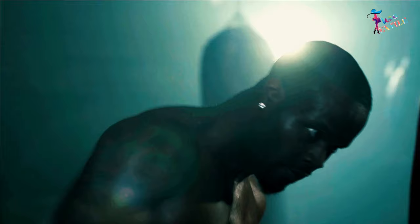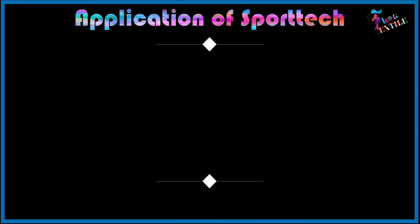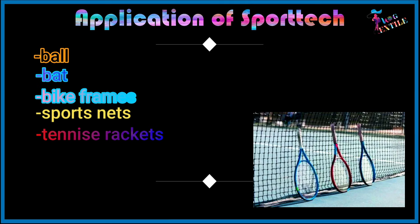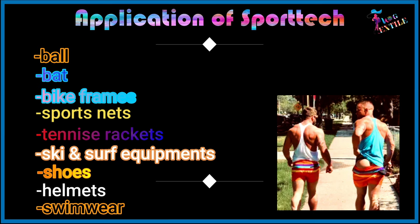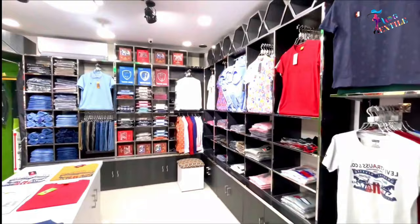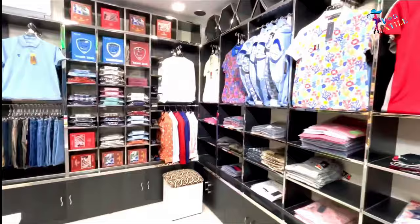Sports textiles are used in manufacturing sportswear, under armour, leisurewear, and related goods and equipment. Applications of sporttech include sports equipment like balls, bats, bike frames, sports nets, tennis rackets, ski and surf equipment, shoes, helmets, swimwear, t-shirts, and socks.